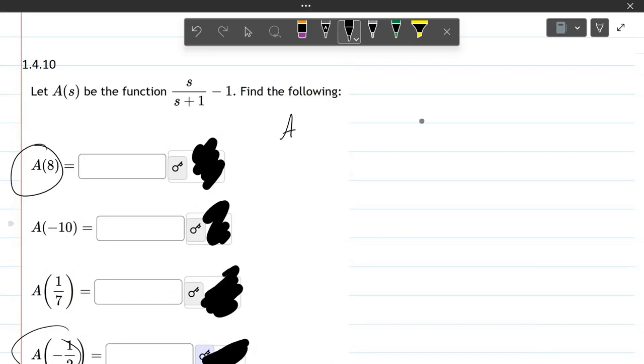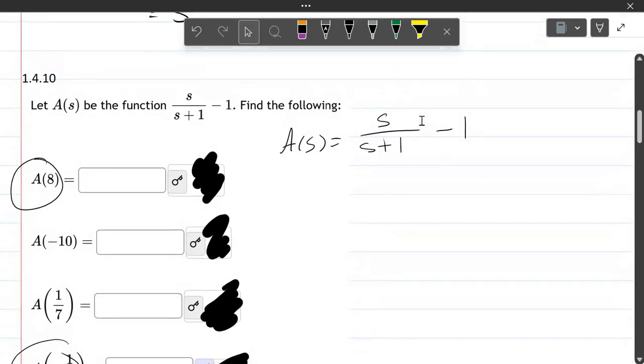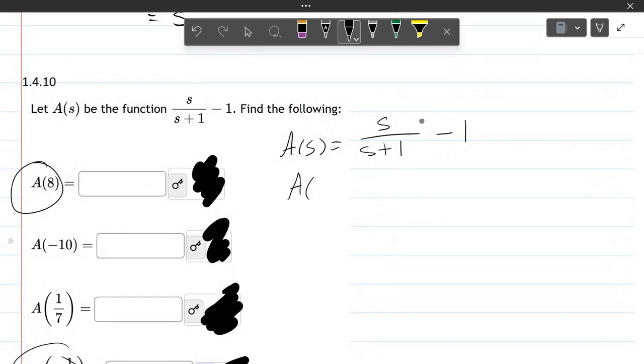So first thing I'm going to do is just rewrite the original in my own writing. Now my s's look like 5's, just be careful. Luckily I won't be writing down 5, so these will all just be s's. So I just rewrote the A of s right here.